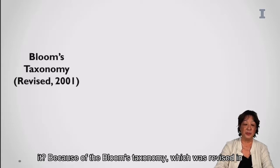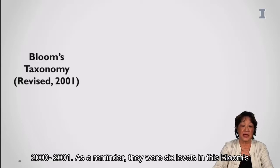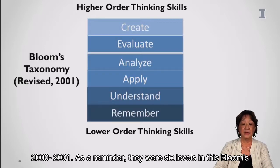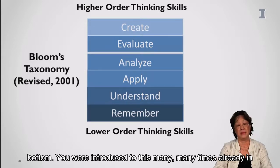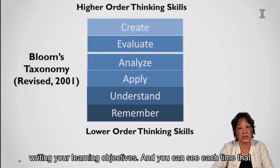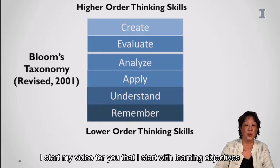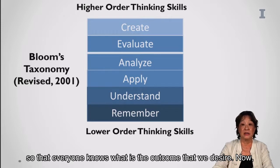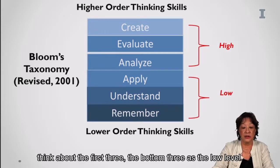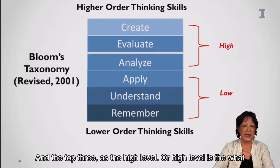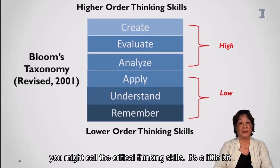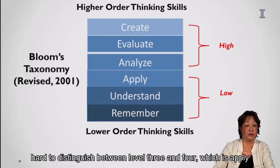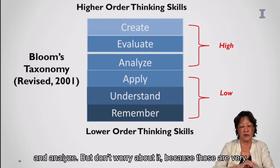I'm focusing on Bloom's taxonomy, which was revised in 2001. As a reminder, there are six levels — the higher level is at the top and lower order is at the bottom. You've been introduced to this many times already in writing your learning objectives. Think of the bottom three as low-level and the top three as high-level, or critical thinking skills. It's a little hard to distinguish between level three and four — apply and analyze — but don't worry, those are very discrete distinctions.